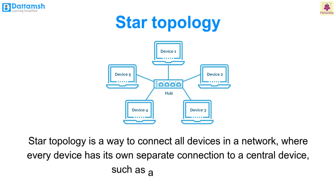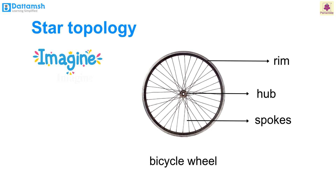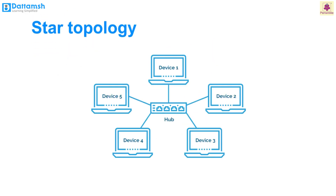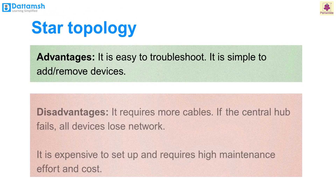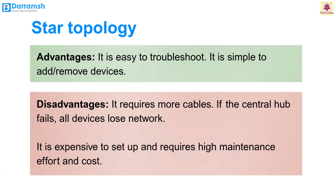Star topology. Star topology connects all devices where every device has its own separate connection to a central device such as a hub or switch. Imagine a bicycle wheel — at the centre is the hub, and multiple spokes extend outward. In star topology, the hub is at the centre and each device is connected by its own separate line. Advantages: easy to troubleshoot — if one device has a problem, it doesn't affect the rest; simple to add or remove devices. Disadvantages: requires more cables; if the central hub fails, all devices lose network; expensive to set up and requires high maintenance.